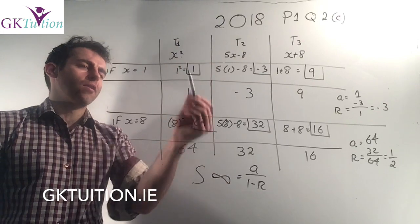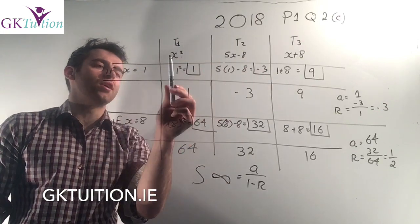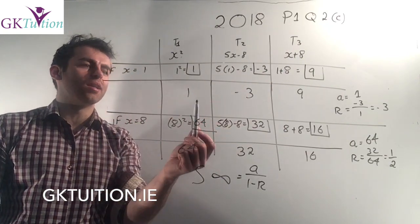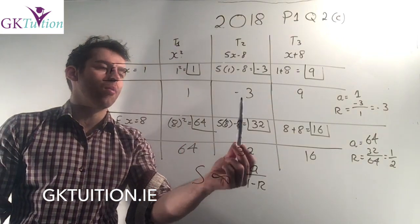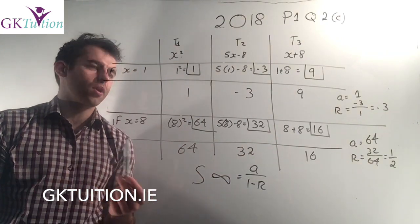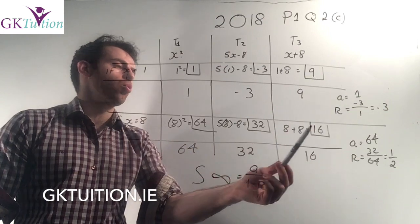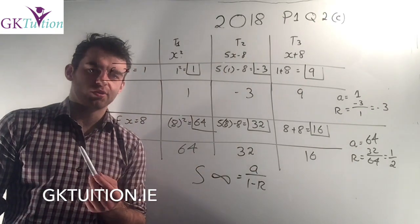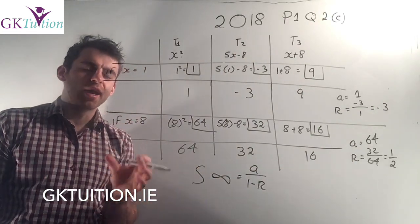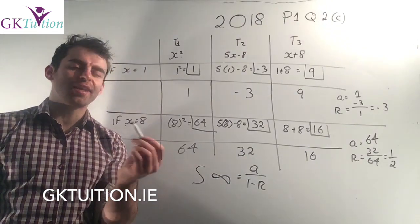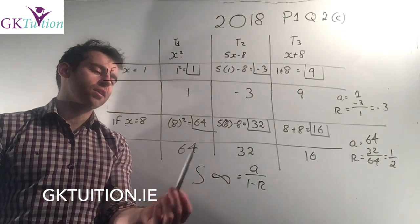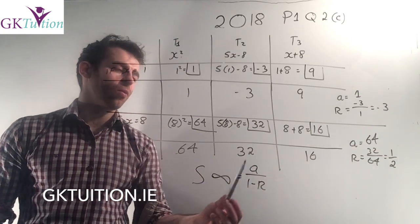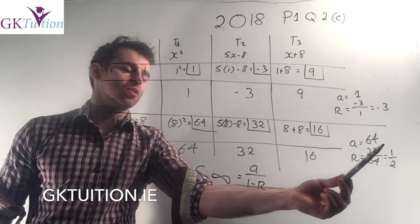So the first thing I've done here is I've done out a table. So I've t1, t2, and t3, I know as x squared, 5x minus 8, and x plus 8. If x equals 1 and I sub in, my geometric series is 1, minus 3, 9. In that case then the a, the first term is 1, and the common ratio is any term divided by the previous term. Minus 3 divided by 1 is just minus 3. On the other hand, if I use my other value for x, where x equals 8, I will get 64, 32, 16. In this case the first term is 64 and my r is any term divided by the previous term, which is a half.